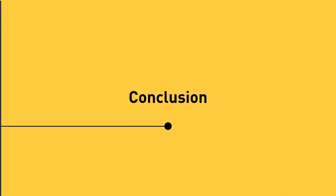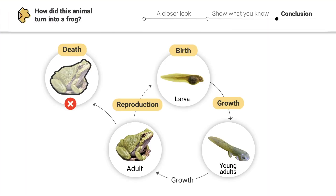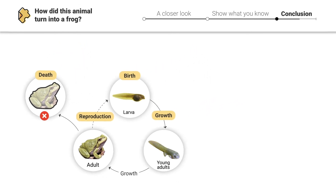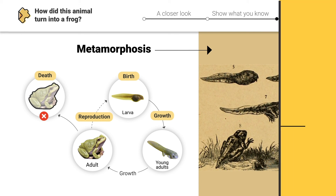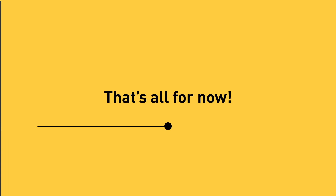From this lesson, remember: amphibian life cycles include birth, growth, reproduction, and death. But as they grow, amphibians go through a process called metamorphosis where they totally change their appearance. That's all for now, but stay tuned for next time!